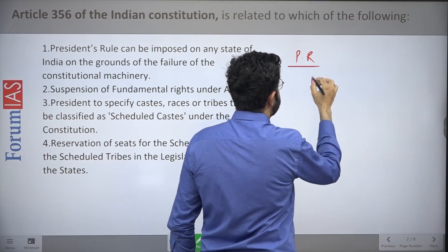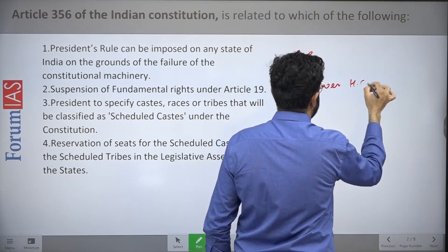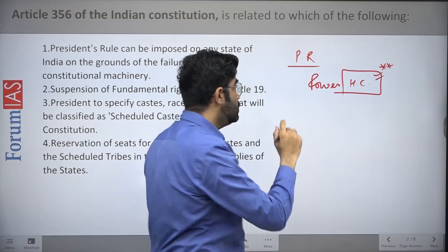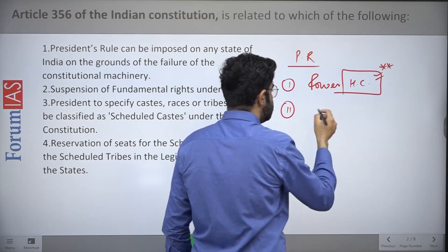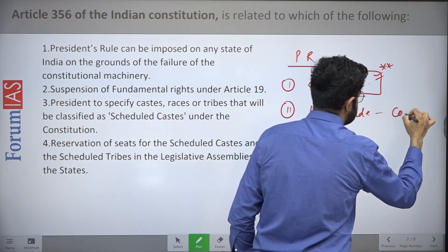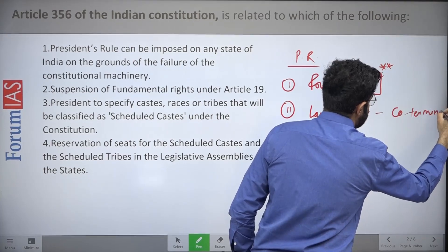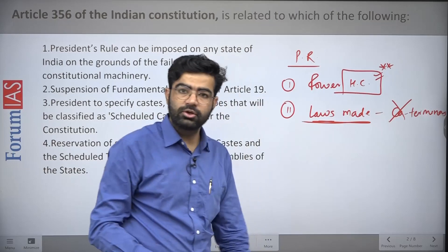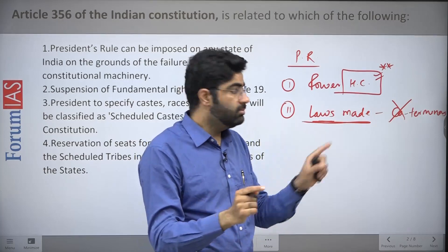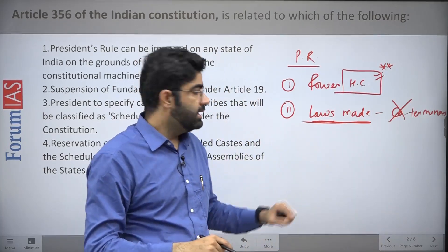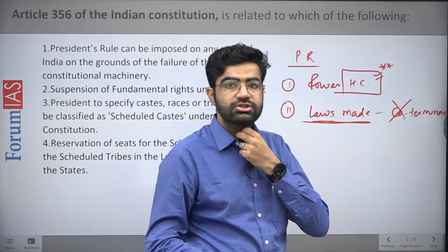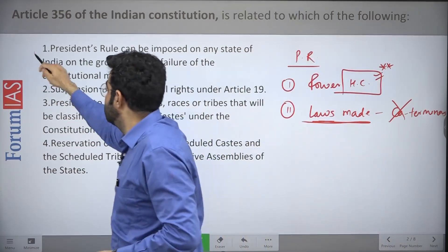One more important point: during President's Rule, the powers of the High Court remain intact — no change occurs there. Also, the laws made during President's Rule are not co-terminus with it. If President's Rule is revoked, the laws made under it do not automatically dissolve or terminate. However, they can later be amended, removed, or modified by the incoming state government.